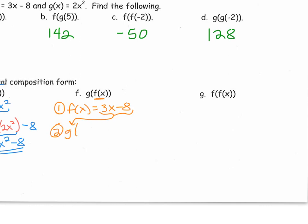So instead of x, we're going to substitute in 3x minus 8. g of x is 2x squared. We're going to start with 2, but instead of x squared, we're going to square that 3x minus 8.